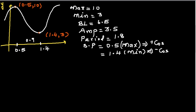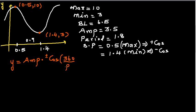Let me write the general equation of a sine or cosine graph. We'll focus on the cosine graph since most situations give you the maximum or minimum. The equation is: y = amplitude × (±cos) × (360 / period) × (x − starting point) + baseline. If you know this formula, you can write any trig equation based on sine or cosine.